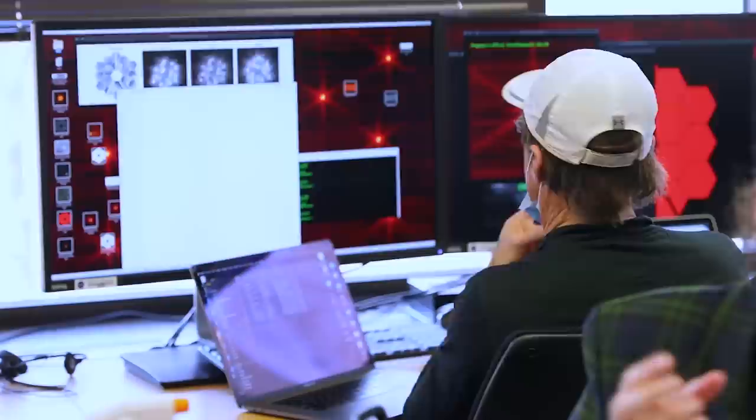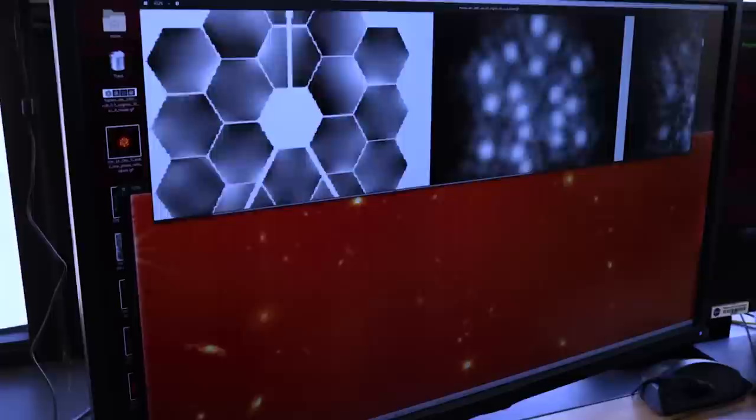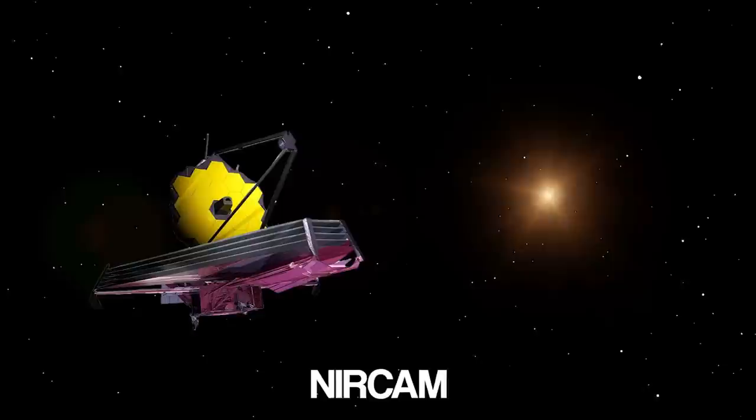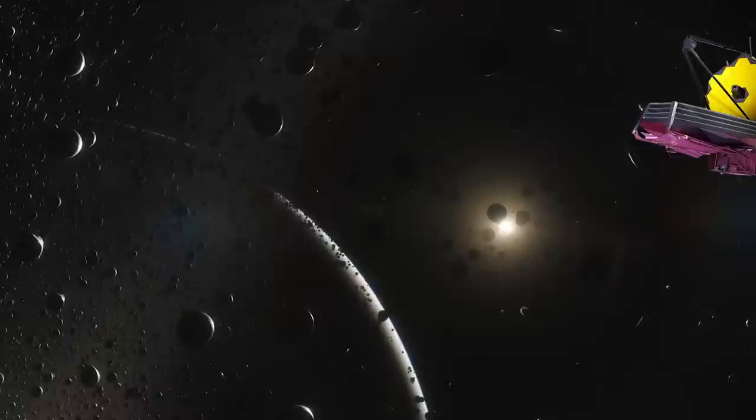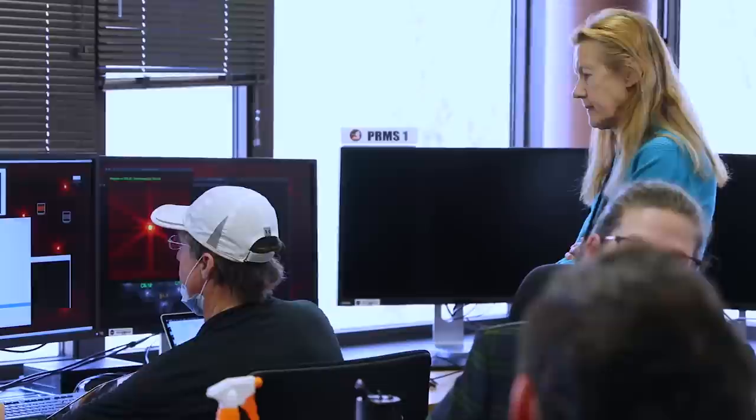After this assembly and alignment was completed, it was able to engage its scientific instruments for the first time on location. These instruments inside Webb's Integrated Science Instrument Module include a mid-infrared instrument, otherwise known as MIRI, a near-infrared camera dubbed NIRCam, a near-infrared spectrograph that's NIRSpec, and a near-infrared imager and slitless spectrograph combined guidance sensor, or NIRIS/FGS.